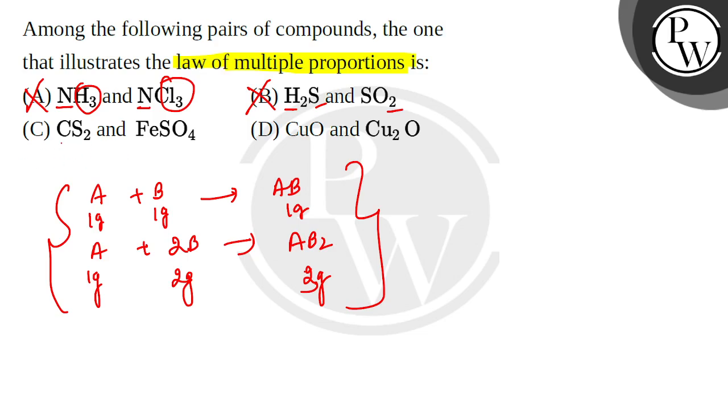In C, there is also carbon, sulfur, iron, and oxygen. So there are four types of elements. So again, this is invalid.